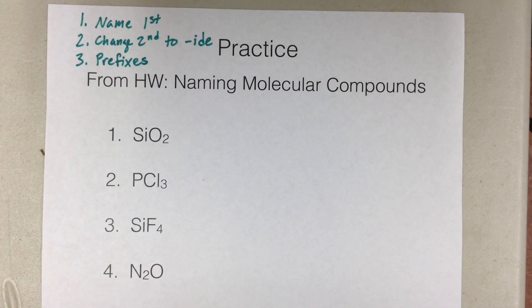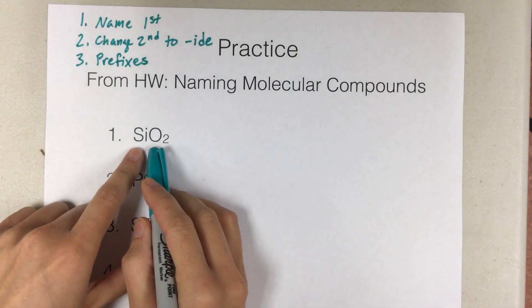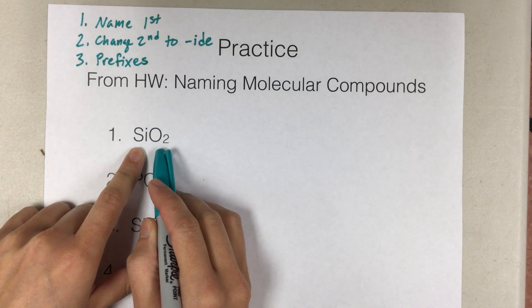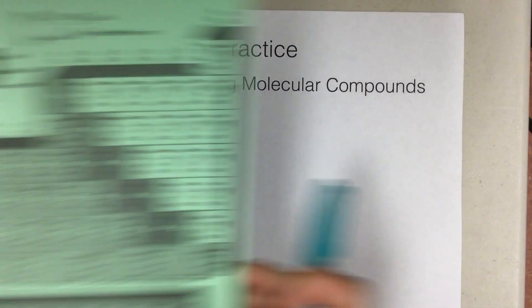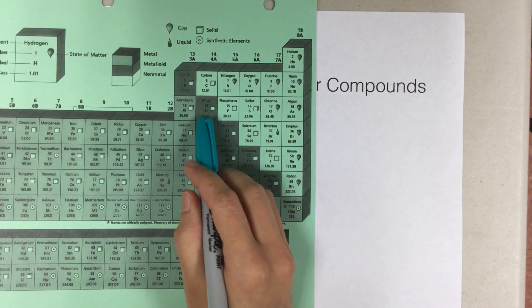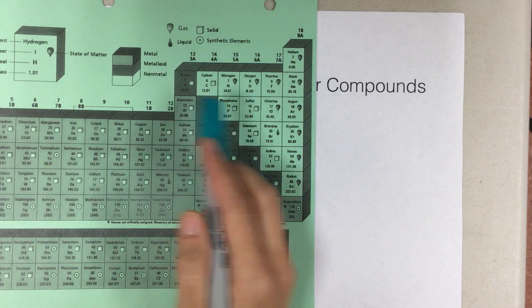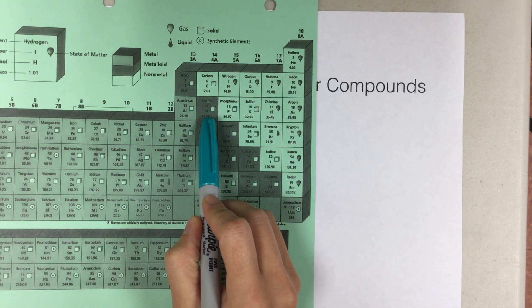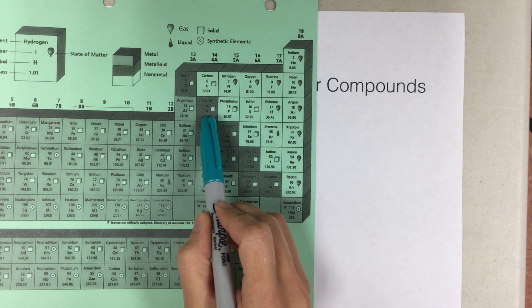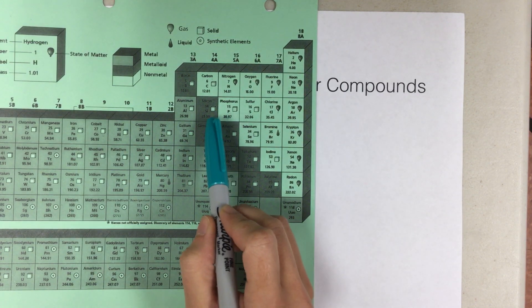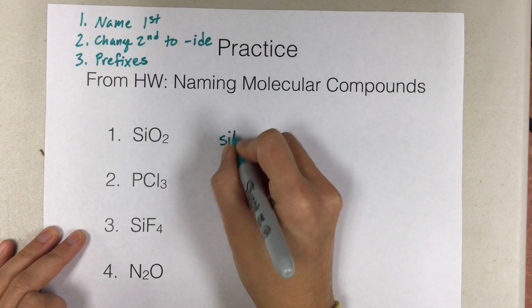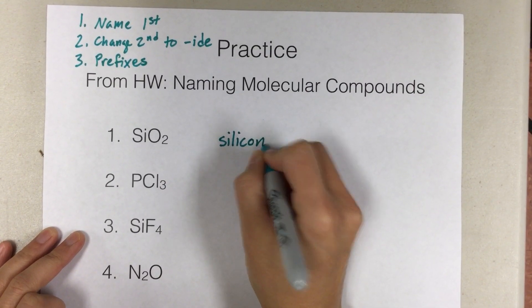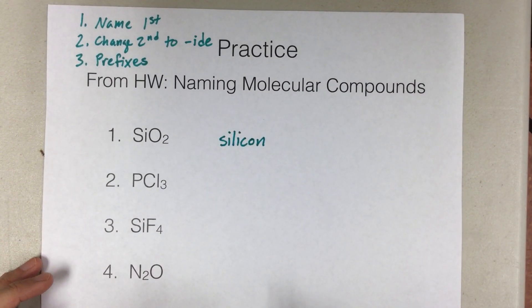Okay, so we're just going to follow our steps here. So first, as we're looking at number one, the first thing to do is name the first element. So Si, if you forgot what Si is, just look on your periodic table. And actually, this one is a metalloid, but we'll still name that as a binary molecular compound. So the first one is silicon. So I'll write silicon. All right, so that's naming the first element.